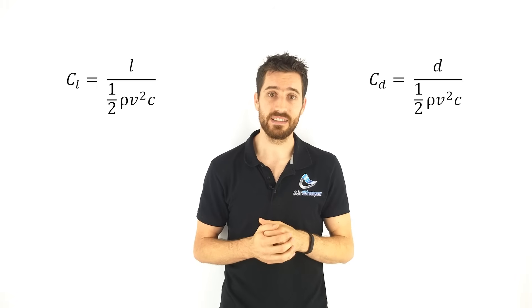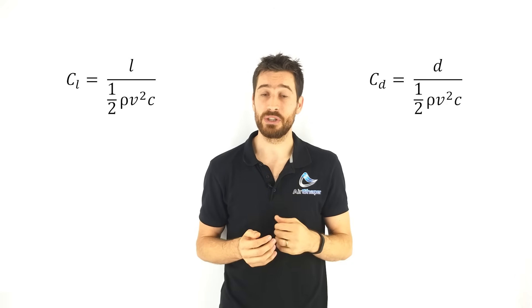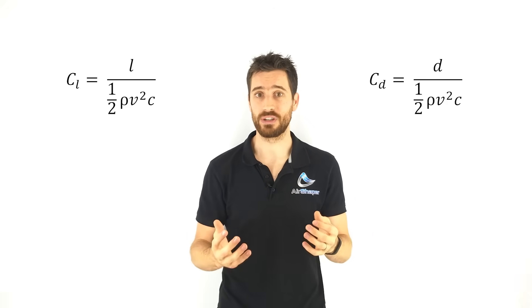They're calculated by dividing the lift or drag force per unit width of the airfoil by the product of the stagnation pressure and the cord length.